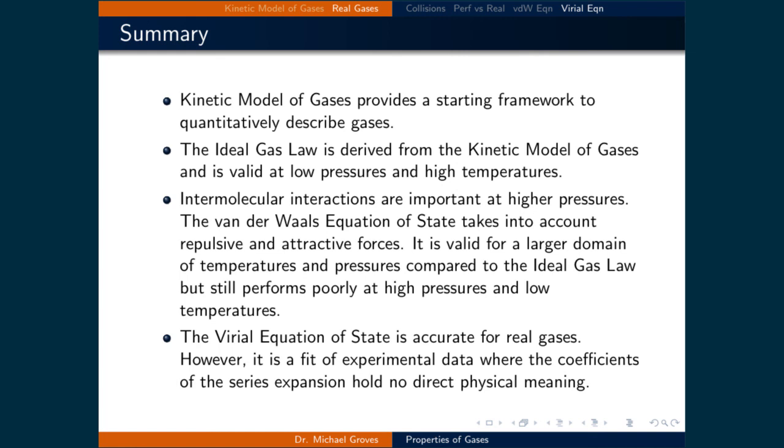The virial equation of state is accurate for real gases. It relies on a concept called compressibility, which is a direct measure of how the pressure of gases change as a function of volume. The fitted parameters for compressibility have no physical meaning, so no direct correlation between the fitted parameters and intermolecular interactions is possible.